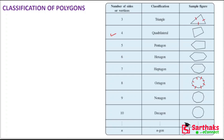Quadrilaterals can also be of many types, as can triangles — like equilateral, isosceles, scalene, and right-angled triangles. Similarly, different kinds of quadrilaterals include square, rectangle, parallelogram, rhombus, kite, and trapezium. A triangle has three sides and three vertices; a quadrilateral has four sides and four vertices.